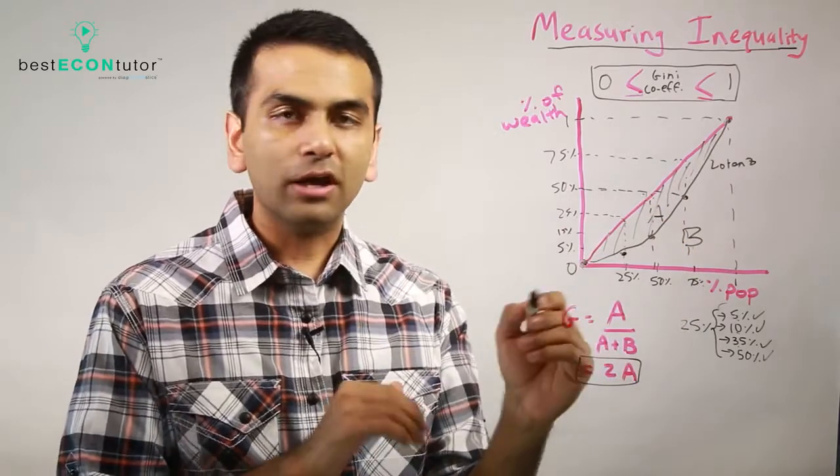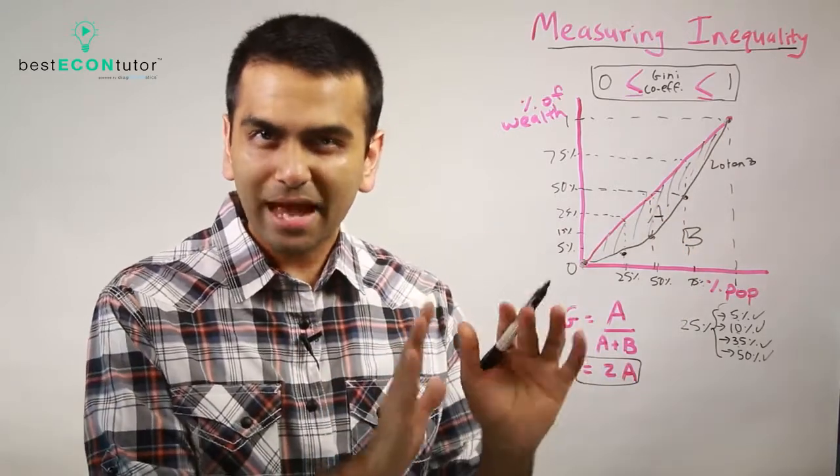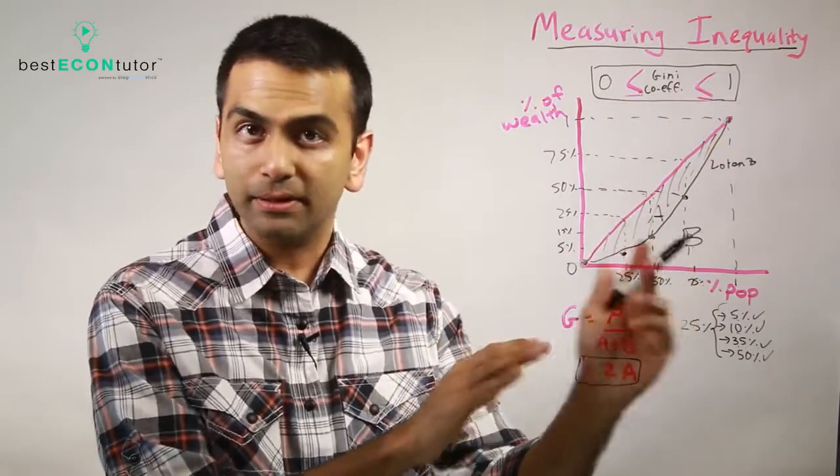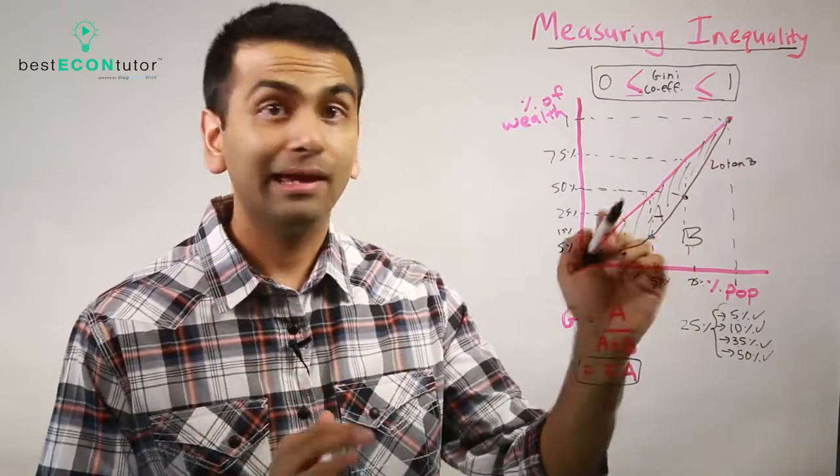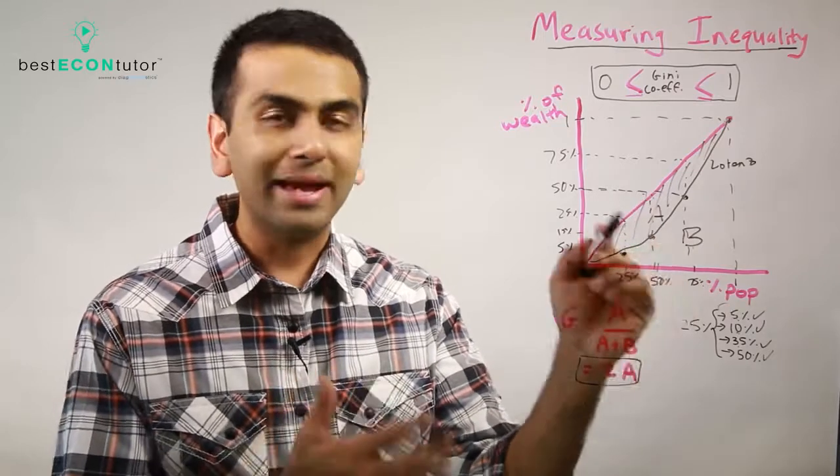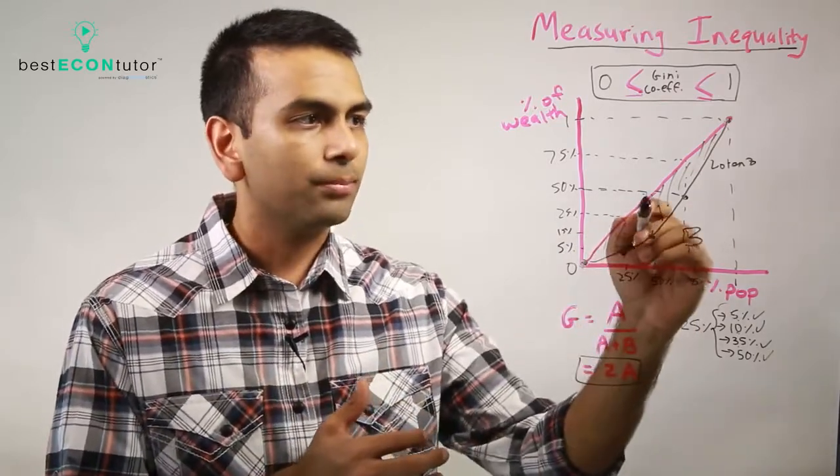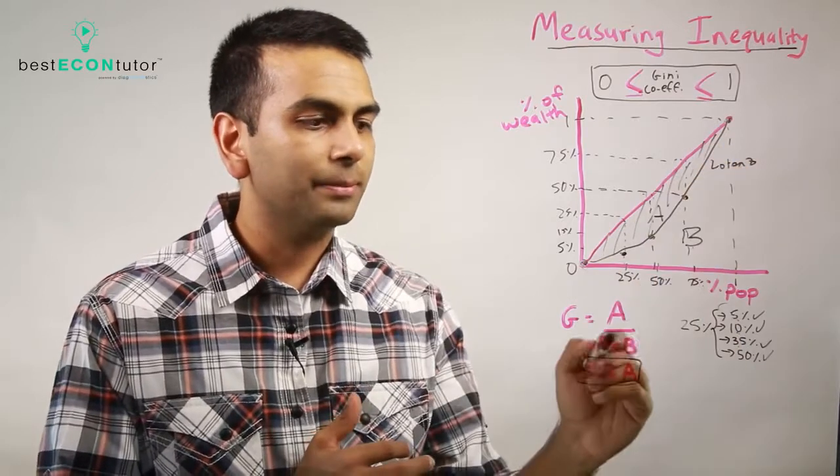So here's how you measure the Gini coefficient. Now that we have the Lorenz curve broken down into area A and area B, the Gini coefficient is simply area A divided by A plus B. So it's A out of A plus B, kind of like a percentage—this much portion out of the total A plus B.